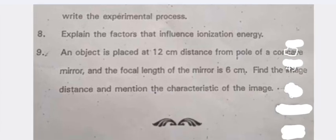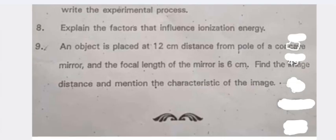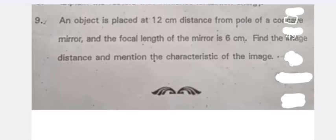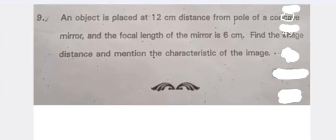Eighth: Explain the factors that influence ionization energy. Ninth: An object is placed at 12 centimeter distance from the pole of a concave mirror and the focal length of the mirror is six centimeters.